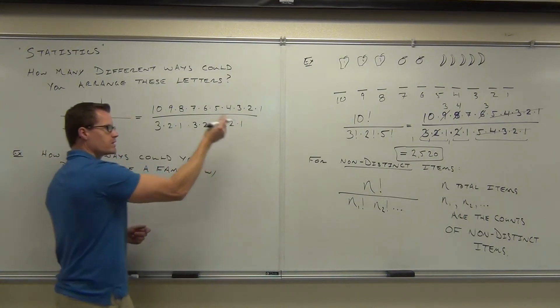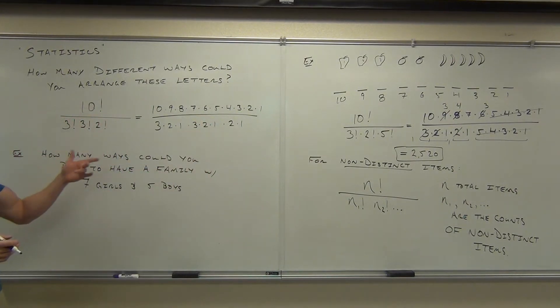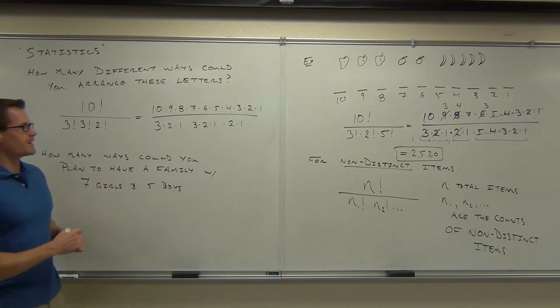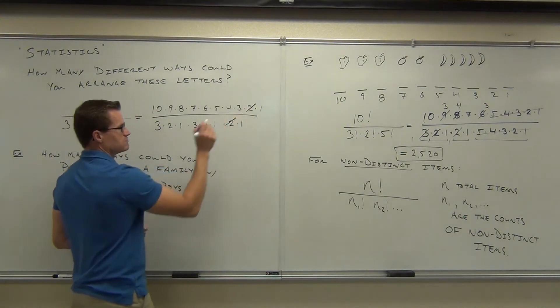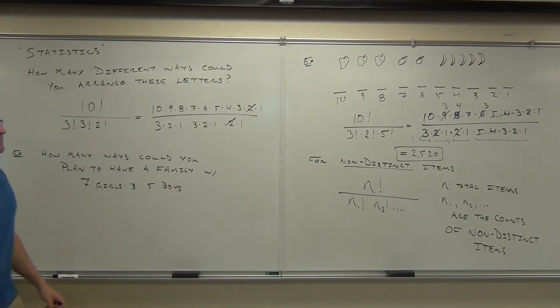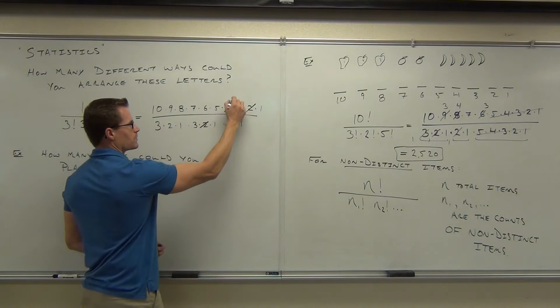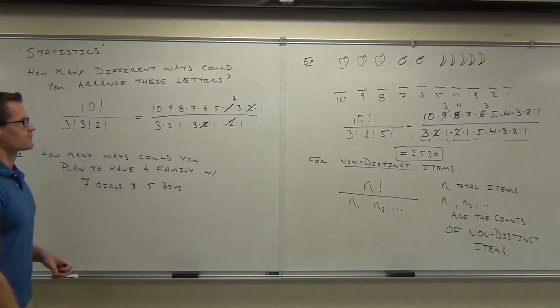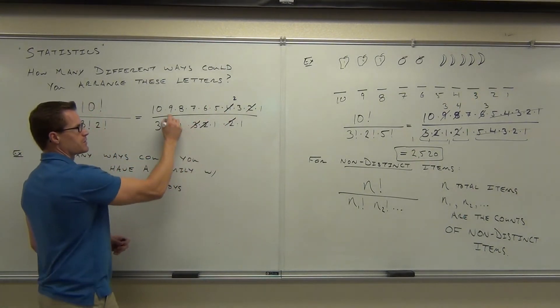2 factorial. Now the 1's don't do a whole lot for us, but the 3, the 2, the 3, the 2, and the 2, those should all simplify. If you simplify these the way I'm looking at it, I'd say these 2's are gone. We're going to simplify those out. Maybe this 2 and this 4. Maybe this 3 with the 9.